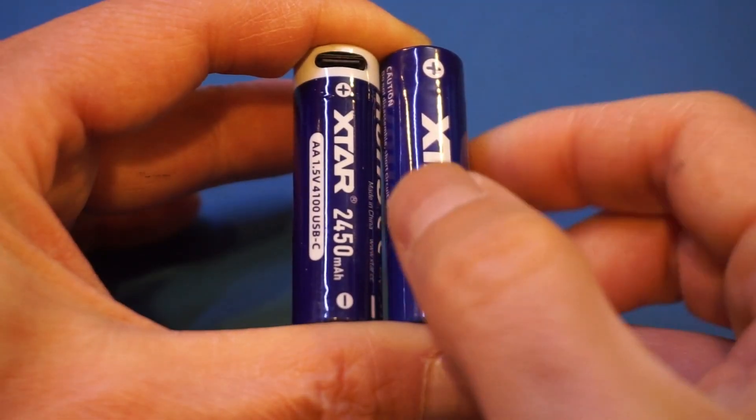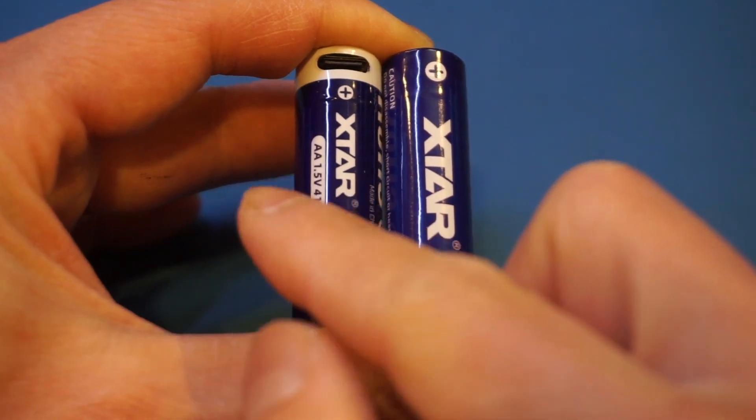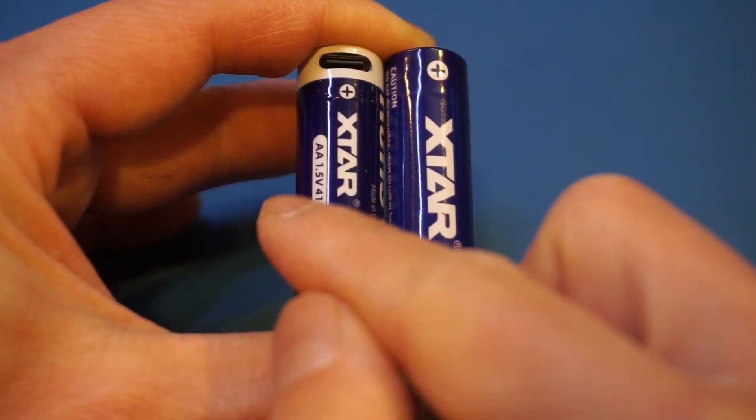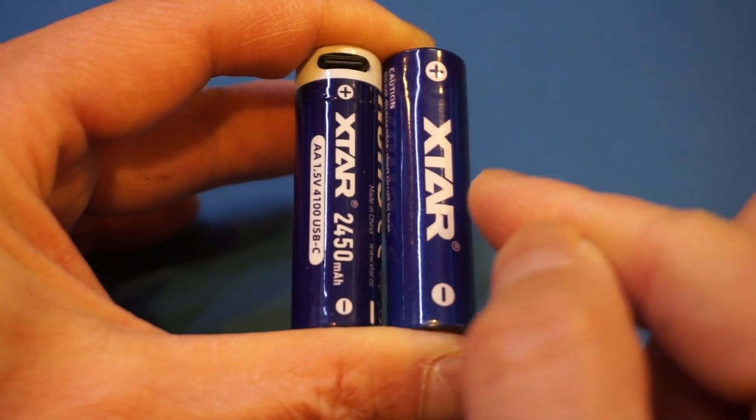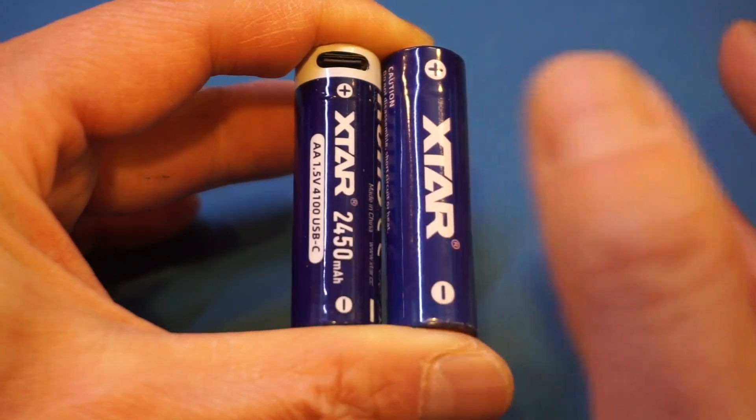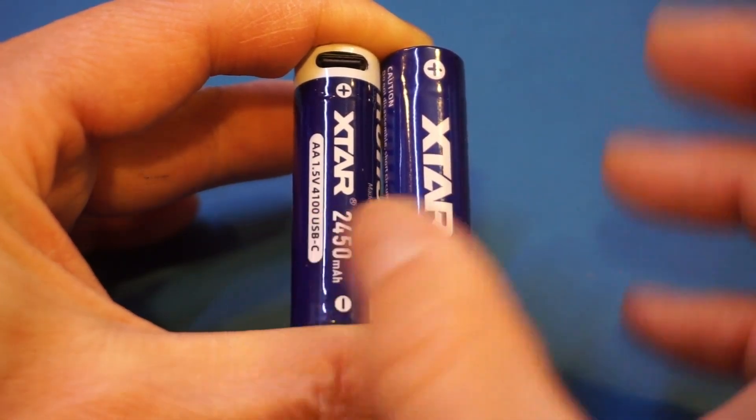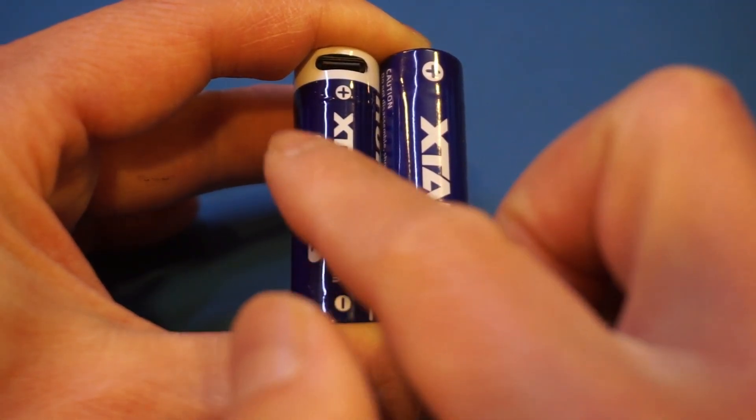Now this one with the USB-C port has a capacity of 2450 milliamp hours and the one without has a slightly higher capacity at 2500 milliamp hours. In my opinion though it probably doesn't matter that much as it's only a two percent difference between the capacities. This one with the USB-C port definitely gives you more flexibility.